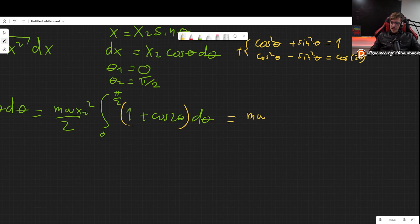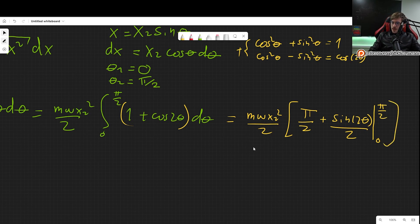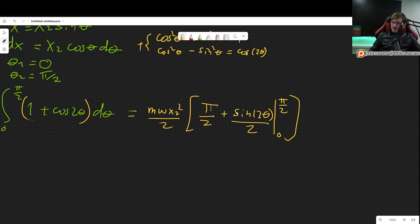Okay, so now let's integrate this. The first integral is trivial. It is simply integrating 1. So that is simply pi over 2. Now this integral will give us sine of 2 theta divided by 2. And we have to evaluate this between 0 and pi over 2. However, when we evaluate this at 0, we get 0. Sine of 0 is 0. And evaluated at pi over 2, we get sine of pi, which is also 0. So this thing right here is 0. And what we get is m omega x2 squared times pi divided by 4.